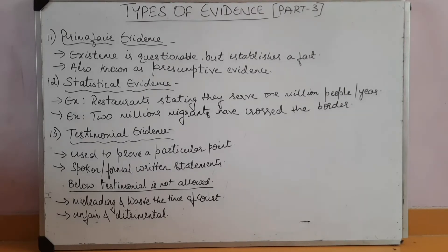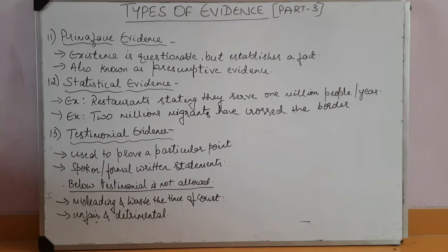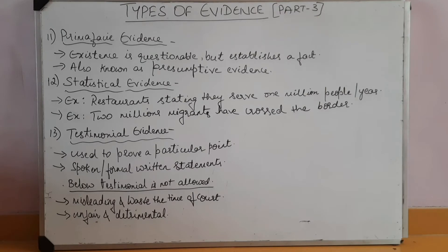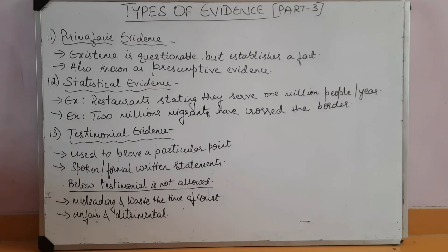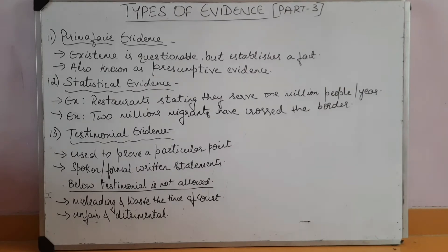The 13th type of evidence is testimonial evidence. Testimonial evidence refers to evidence used to prove a particular point by testimony to the courts. Testimonial evidence is inadmissible in a court of law in the following cases: if it is misleading and wastes the time of the court; if it is unfair and detrimental; if it comes from information between the attorney and the client; or if it is not actually provided by the expert witness.